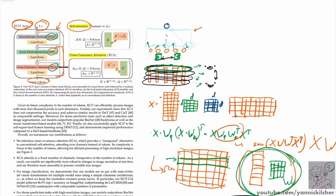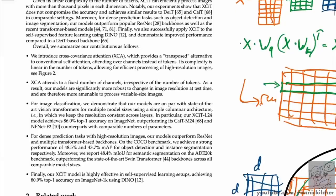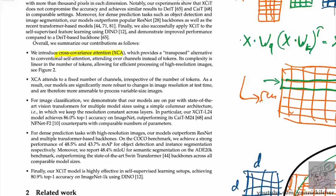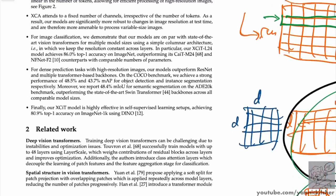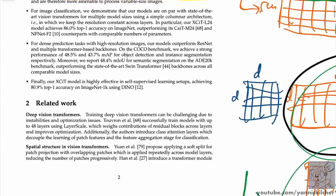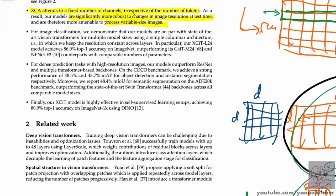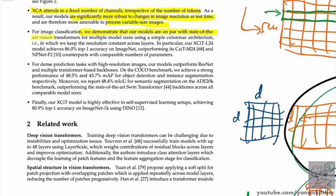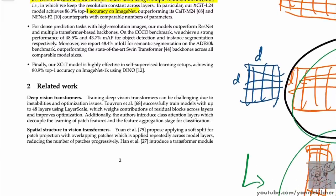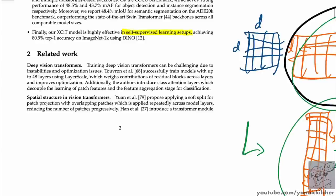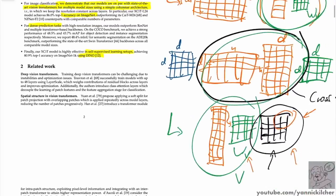Their contributions include: cross-covariance attention as a transposed alternative to self-attention operating across channels instead of tokens; linear complexity in tokens; robustness to changes in image resolution, enabling variable-size images. For image classification, their models are on par with state-of-the-art vision transformers at multiple model sizes, achieve good accuracy on ImageNet, handle dense prediction tasks, and support self-supervised learning using something like DINO.